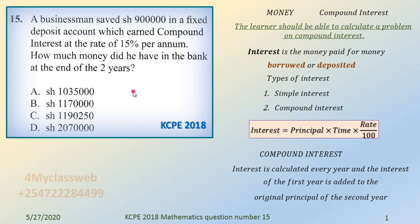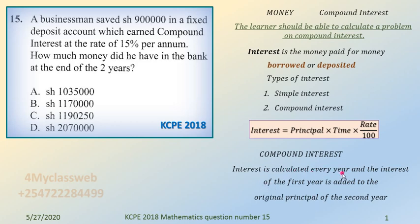We are told that a businessman saved 900,000 shillings in a fixed deposit account which earned compound interest at the rate of 15% per annum. How much money did he have in the bank at the end of the second year? The principal here is 900,000, the rate is 15% per annum, and the money was to remain in the bank for a period of two years.